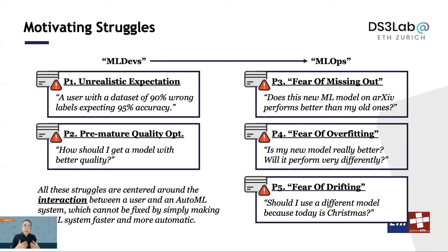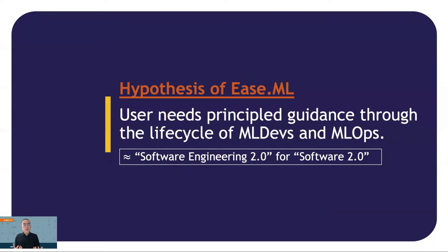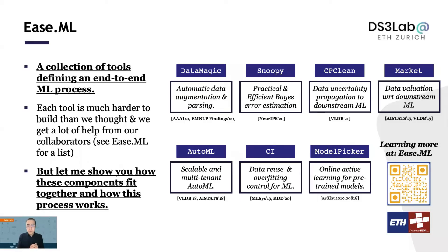Inspired by all these struggles that we see from our users, we believe that what is missing is a set of principles enforced by a collection of tools to guide the user through the full lifecycle of machine learning development and deployment. So ECML is our first trial in doing this, which provides a collection of tools that together defines an end-to-end machine learning process. While building many of those tools are technically engaging on their own, in this talk let me show you the process. If you are interested in how each of these tools work, you can find more details on our ECML website.